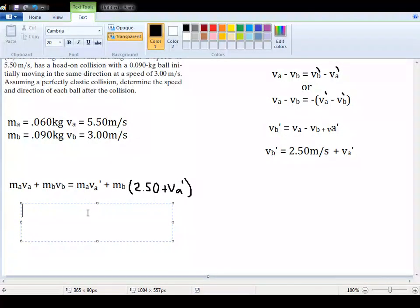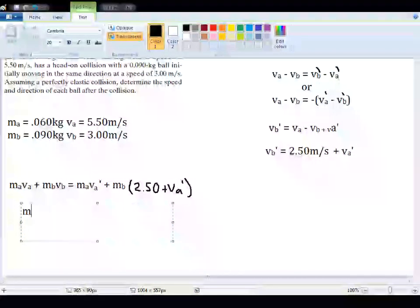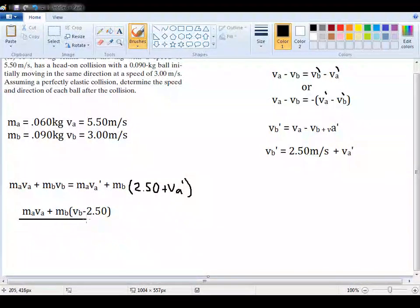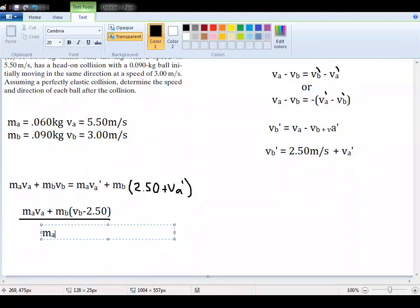Once again, I'm not going to show the work, because it does require quite a few steps. I'm sure you can figure it out on your own, but that's going to, in simplest form, be equal to MA VA plus MB times, and I'm using parentheses here to make things a little simpler to read, the VB minus 2.50 over, and here we're using a fraction, and all this is going to be over MA plus MB.